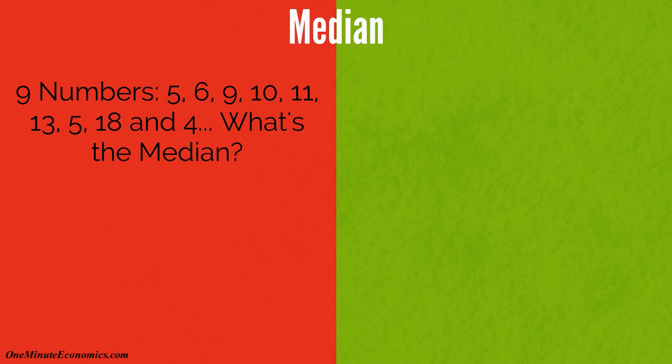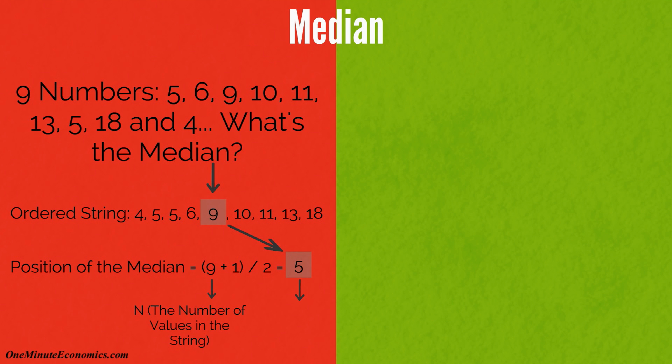If it's an odd string of numbers, there will be one middle number and that's your median. N is the number of values. You'll add 1 to it and divide the result by 2. That's the exact position of the median in your string.